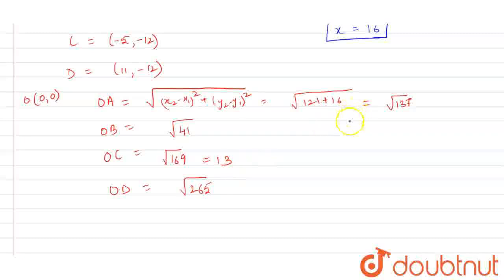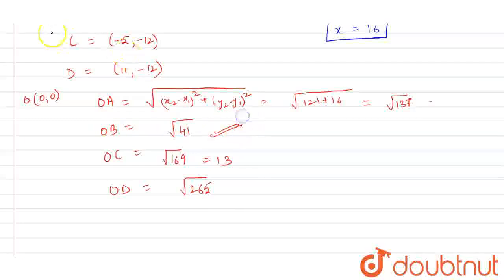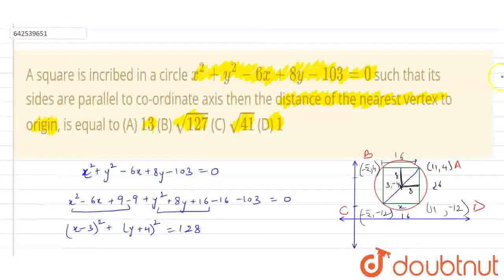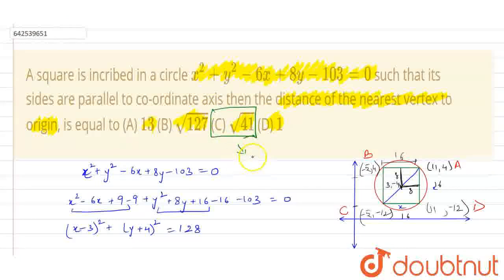So the distances are: OA = √137, OB = √41, OC = 13, OD = √265. The least distance is OB = √41, which is the distance from the origin to vertex B. Checking the options, the correct answer is √41, which is option C.